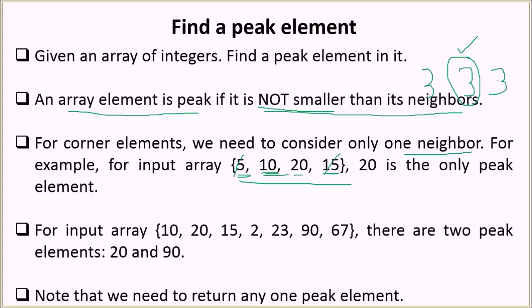Now coming to 10: 5 is smaller, that is fine, but 20 is greater, so 10 is not a peak element. And now 20 — both its neighbors are smaller than 20, so 20 is a peak element, and that's what is written here.